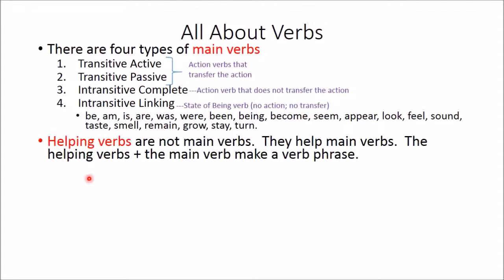There's also another type of verb and that's helping verbs. Helping verbs are not main verbs — those four types above are your four types of main verbs. Helping verbs help main verbs, that's why they're called helping verbs. When you have a helping verb together with a main verb, those together make a verb phrase — a group of words acting together as one part of speech.